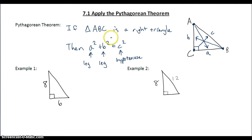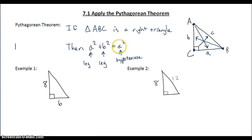So the Pythagorean Theorem has to have a right triangle, and we have leg squared plus leg squared equals hypotenuse squared.